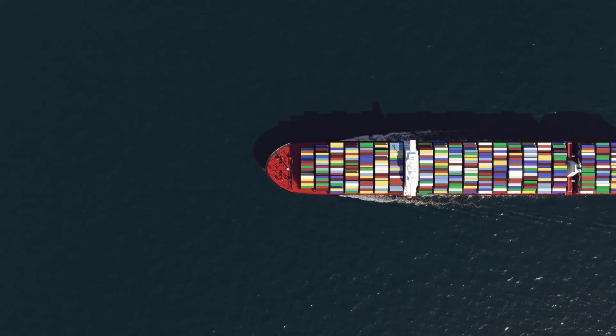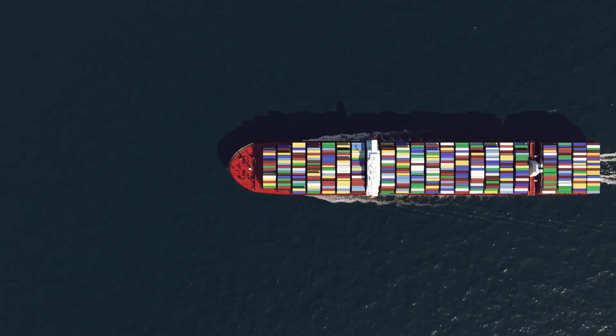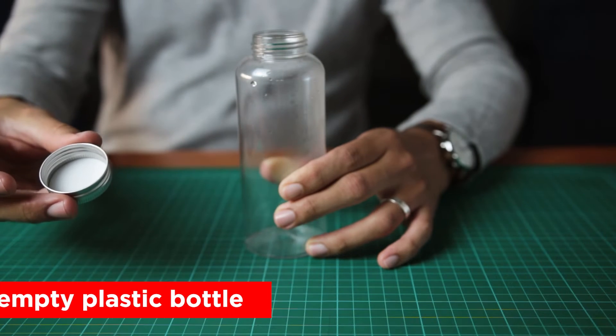This is why even heavy objects like cargo ships float. So here comes the fun part. We're going to make something that takes advantage of density. First, you'll need a clean, empty bottle.